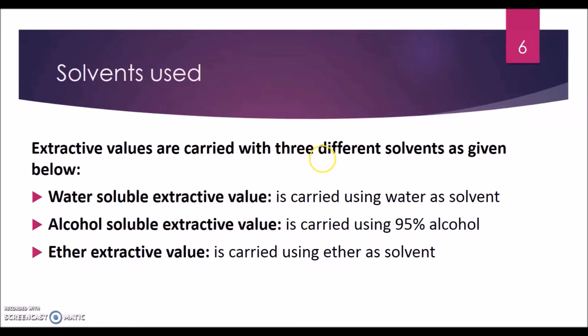There are various solvents available for extraction of a particular drug — right from hexane, benzene, chloroform up to water. But the procedure mentioned in the Indian Pharmacopoeia uses three important solvents: water, 95% alcohol, and ether. We will see the reason why these three are used as the major solvents for evaluating extractive value.